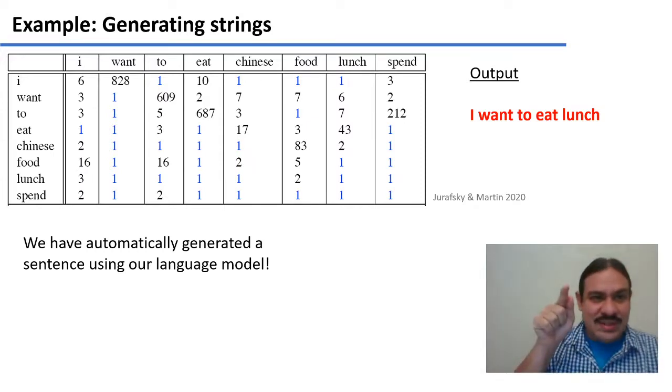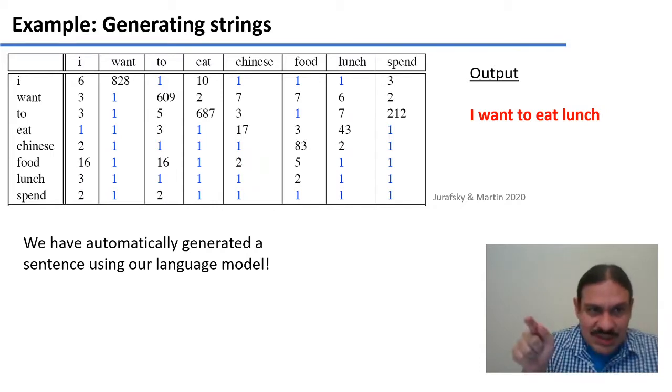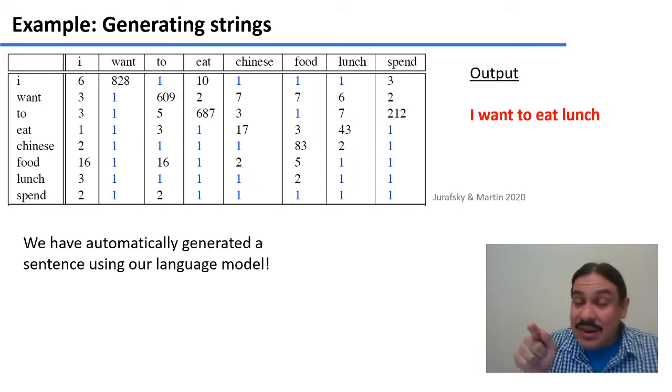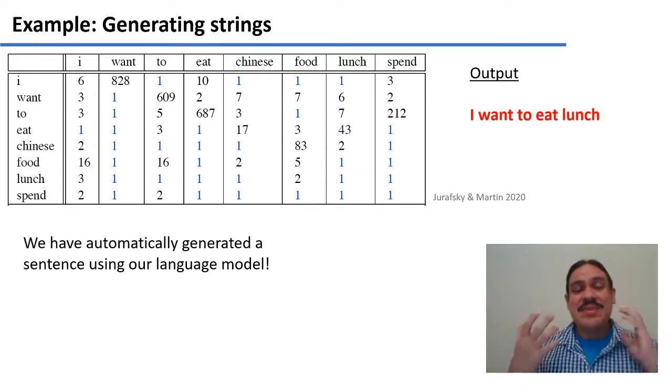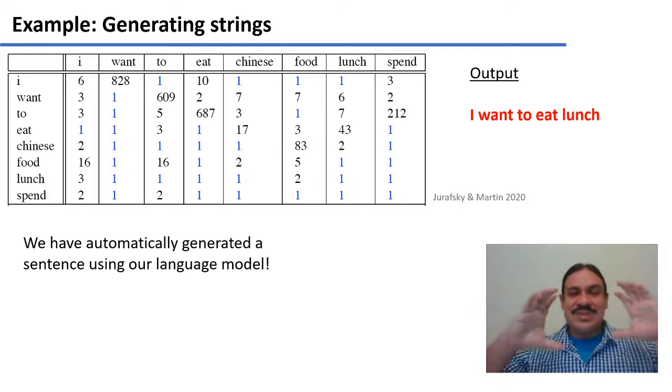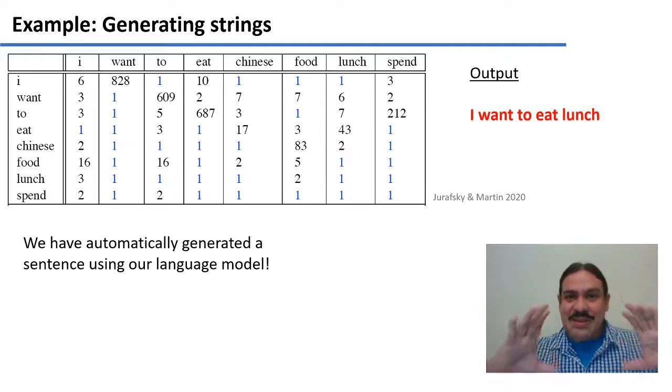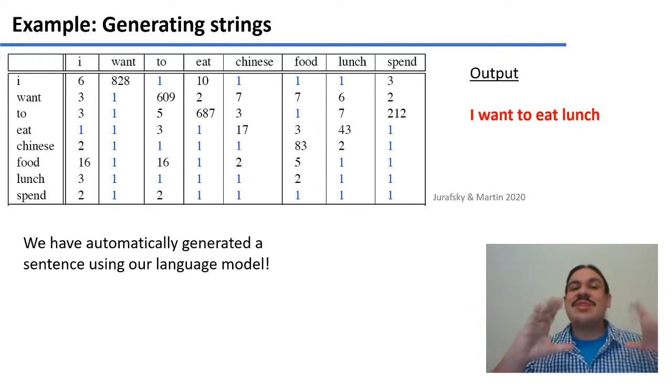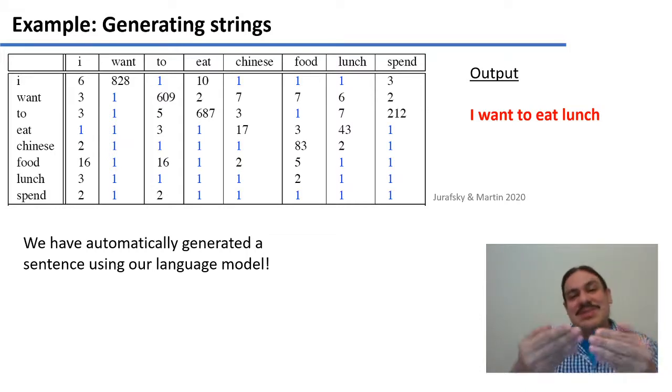I want, 828 times. Want to, 609 times. To eat, 687. Eat lunch, 43. The model just generated a sentence. From these humble starts, which are just counts of how many bigrams you have, this language model could generate a valid, grammatical, and perfectly good sentence of English. I want to eat lunch. So it knows a little bit of English.